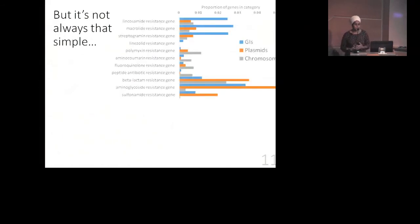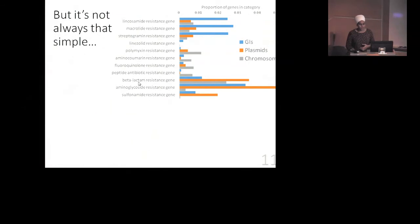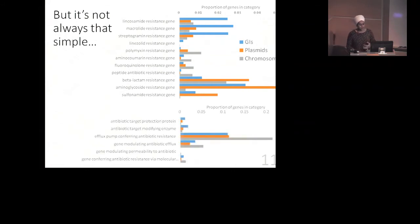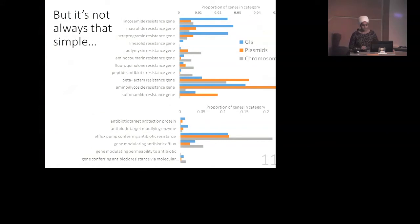We're now working on breaking this problem down by looking at different classes of AMR genes and their associations. We do see certain classes, like lincosamide resistance or macrolide resistance, that are significantly higher proportions in genomic islands, whereas beta-lactam resistance or aminoglycoside resistance are higher in plasmids. We're also looking at mechanisms of resistance — efflux pumps, for example, are significantly higher in the native chromosome. Overall, this has been the very first large-scale study to look at trends of AMR over a large collection of diverse organisms.